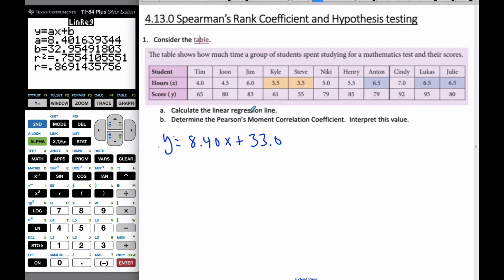The r value is 0.869. Because of that r value, I can say that there is a strong, positive, linear correlation between the hours and the score. That's just a quick review of our r values.